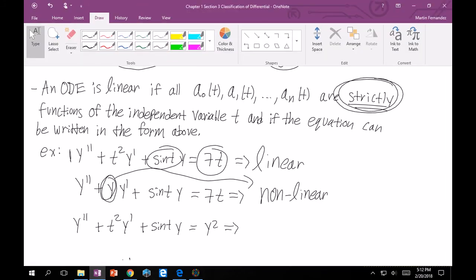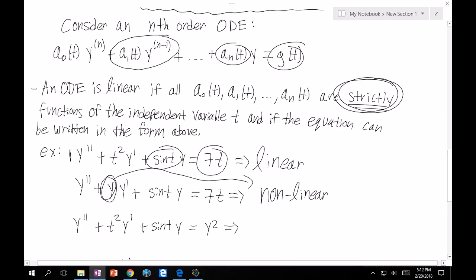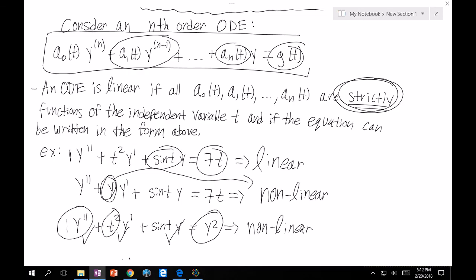Now, something that confuses a lot of my students, and I'll try to make this as clear as possible, is this third one. We have, again, this implied 1, which is fine. This part is okay, because we have our a₀(t) equals 1, y double prime. Fine. t², only a function of t, still okay, times y prime, good. So this is check, check. Sine of t times y, still good. Check. Aha. y squared. y squared is not strictly a function of t, like our g(t) up here. Therefore, that makes this nonlinear. So check both sides of the equation to satisfy this overall equation, and you should be set.